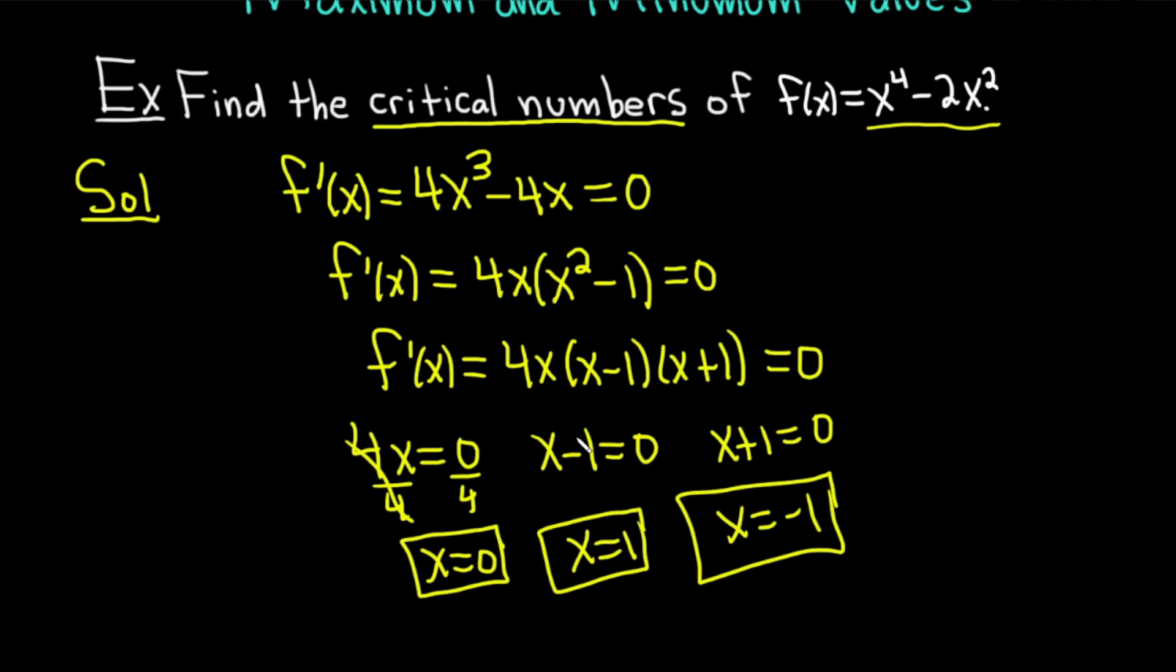So to find critical numbers, basically you take the derivative and set it equal to 0 and solve. Except you want to make sure that the answers you get actually make sense. Like, can you plug them back into your function? You can, right? We're not dividing by 0. There's nothing funny going on. Also, you want to look for places where the derivative is undefined. In this particular example, no issues. Most of the time, it's like this. You take the derivative, you set it equal to 0, and you get your answers. It's just always good to be on the lookout for places where the derivative is undefined.